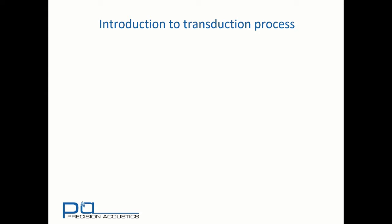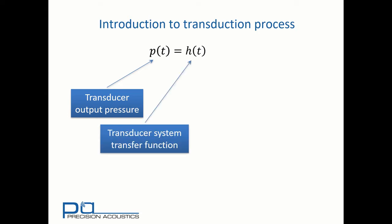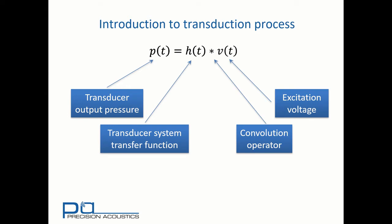We'll begin with a recap of the transduction process. The ultrasonic pressure signal output from a transducer depends upon the transducer's intrinsic system transfer function and the excitation voltage. The pressure output is the convolution of these two.